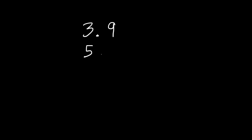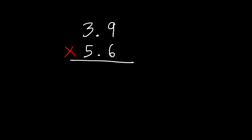Now let's try another example. Let's multiply 3.9 by 5.6. Feel free to try this one if you want to. So first, let's multiply 9 times 6. 9 times 6 is 54. So we're going to write the 4, and then we're going to carry over the 5.